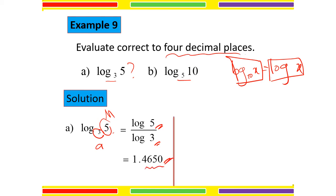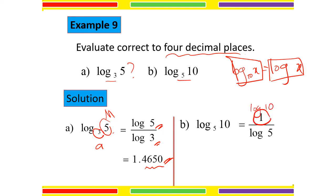For question B: log base 5 of 10 — change base to 10. We get log 10 divided by log 5. Since log 10 equals 1, this becomes 1 over log 5. Using the calculator, the answer is 1.4307.